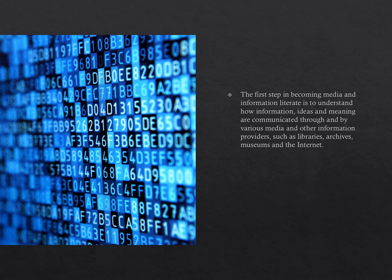The first step in becoming media and information literate is to understand how information, ideas, and meaning are communicated through and by various media and other information providers, such as libraries, archives, museums, and the internet.